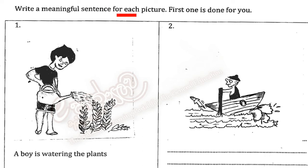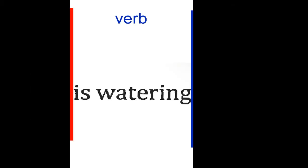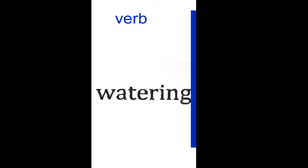So this is the first picture. Okay, look at the sentence. What are the verbs? There are two verbs: is watering. 'Is' is a be verb, an auxiliary verb. 'Watering' is the main verb.